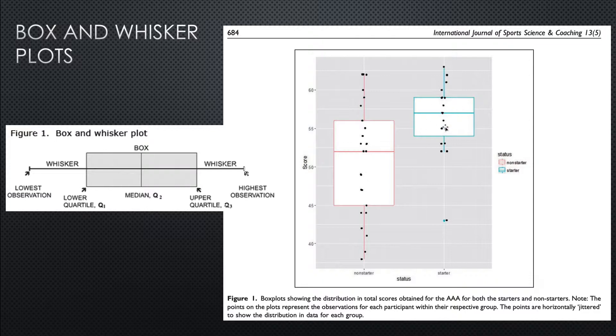And they were much tighter in their distribution. The quartiles were much smaller. So it seemed that starters certainly fell within a much smaller range of scores.